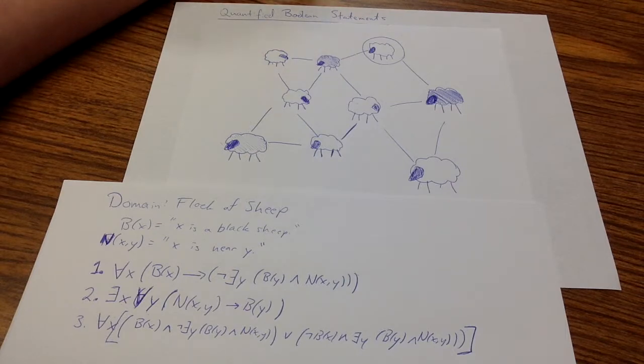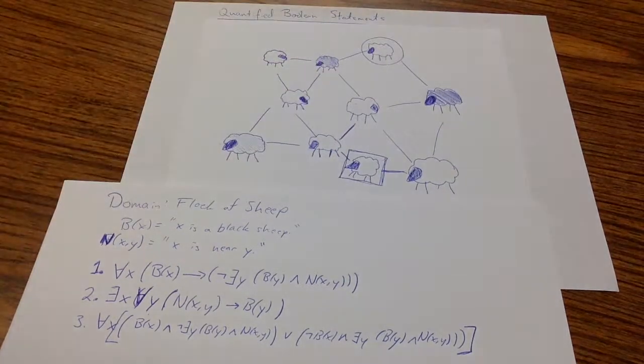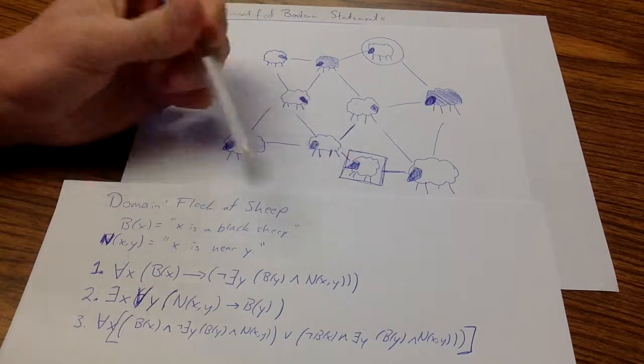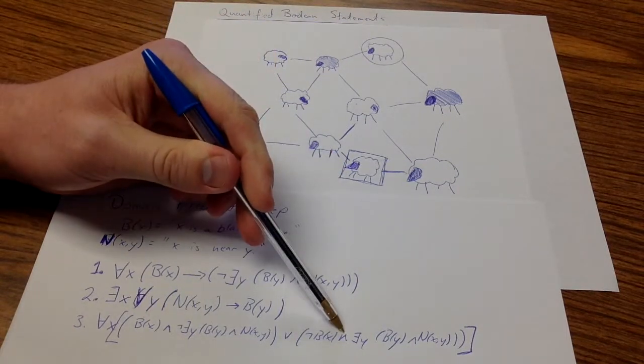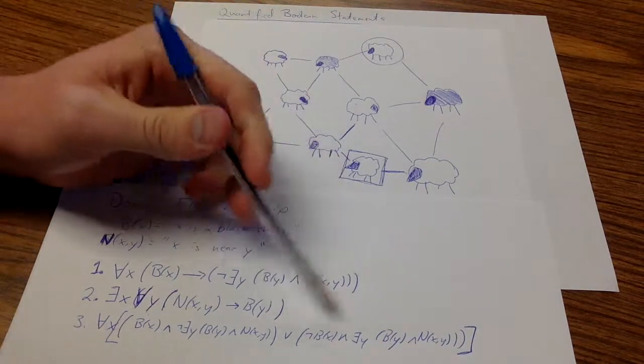To make this statement would be false if I drew another sheep here. This sheep in the box is a counterexample to this third statement. If I make x be this sheep, well, it's not black, so therefore this side fails. But it's white, but there does not exist a nearby sheep that is black. So this is a counterexample to this statement.